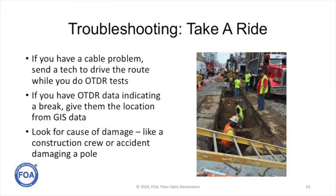If your OTDR indicates you have cable damage, the first thing you should do is send somebody out to drive the route of the cable plant. Make sure they have the GIS data. Drive the route and look for people working along the route. If you see a contractor working in the area of the problem, you may have located your problem already. It's happened many, many times.